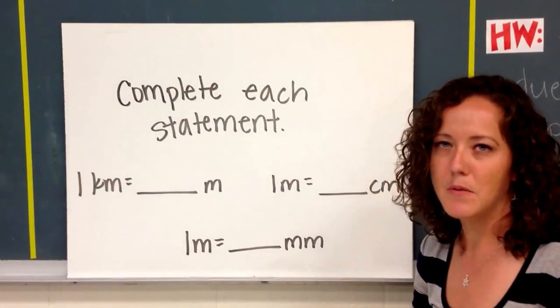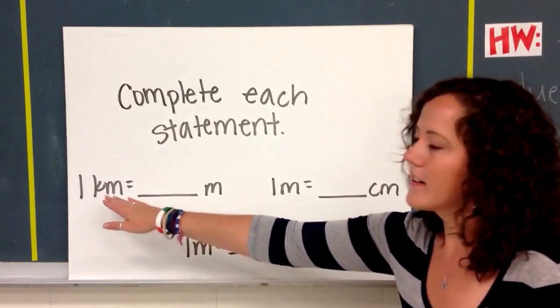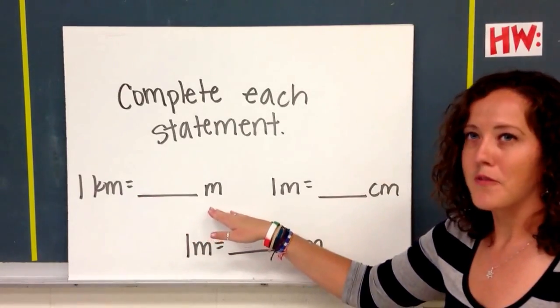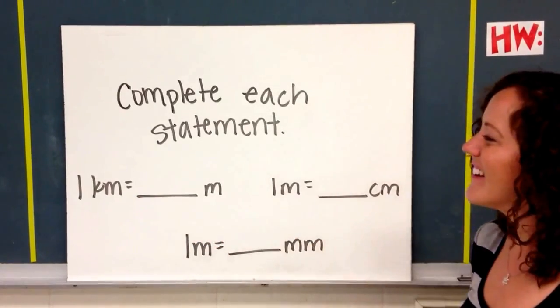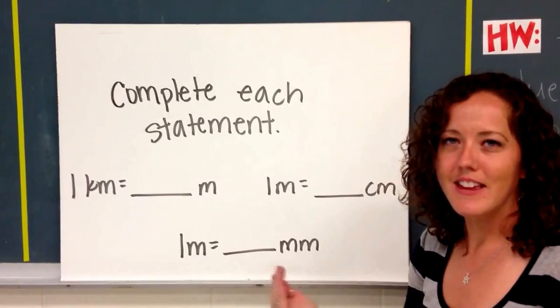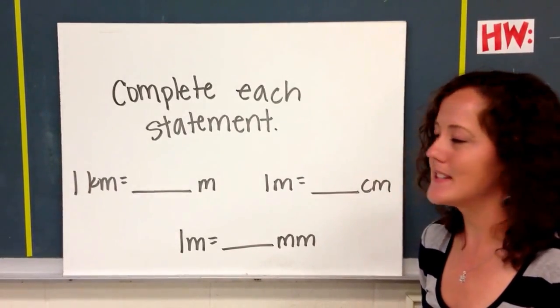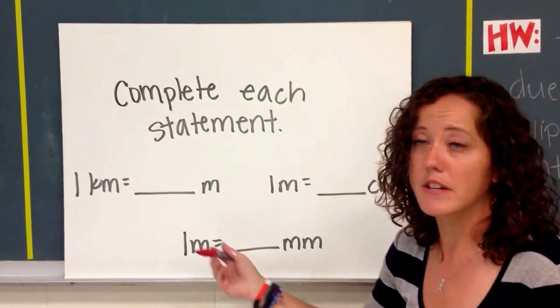So let's complete each statement, and we're going to convert a little bit. 1 kilometer is equal to how many meters. So kilometer, the kilo prefix means 1,000, so this means that we have 1,000 meters for every 1 kilometer.